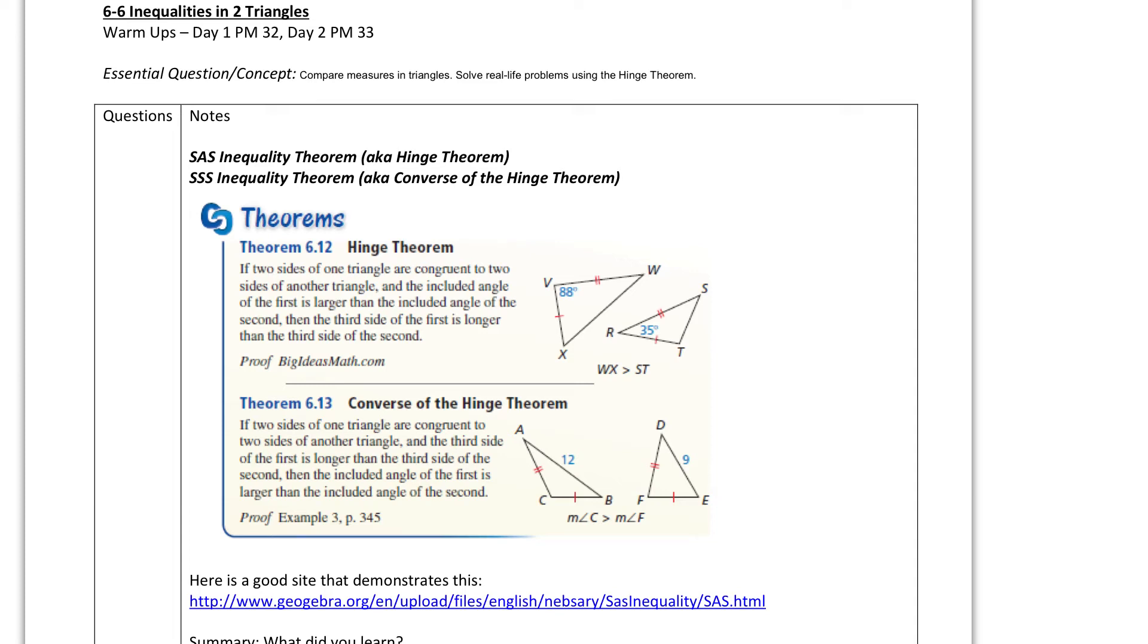Hey everybody, it's Mr. N, and we are going to do this next lesson, which is on inequalities in two triangles. So we've got two theorems that we're going to talk about. The first one, most books call it the hinge theorem. Here in this book, they call it the side angle side inequality theorem, and here's what it says.